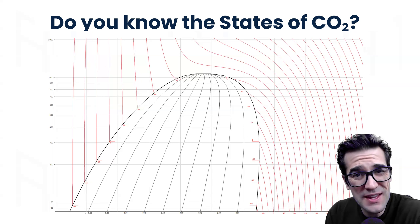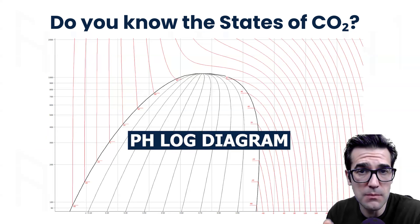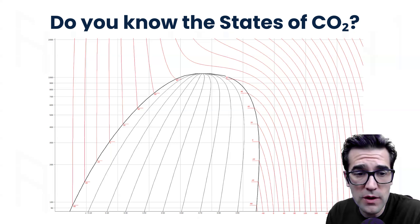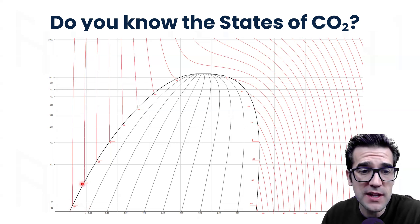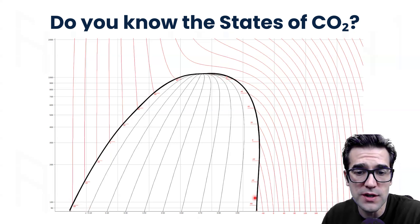First step is understanding the enthalpy diagram, the pH diagram, the molar diagram, the log diagram, whatever you want to call it. This is what we call the bell curve in refrigeration. Every refrigerant has one of these.